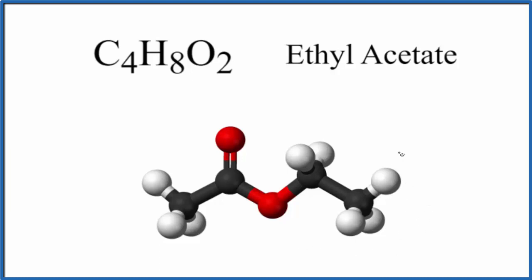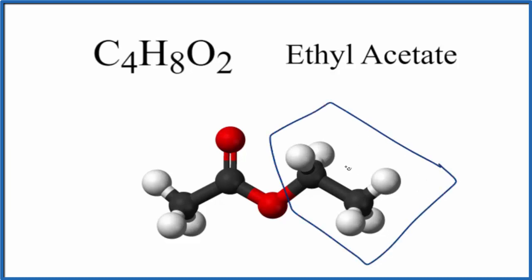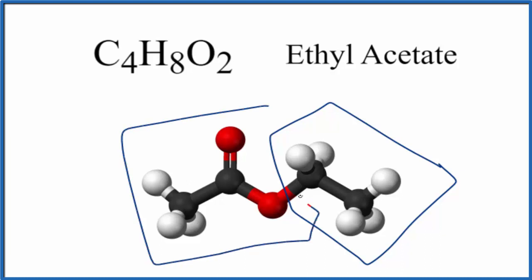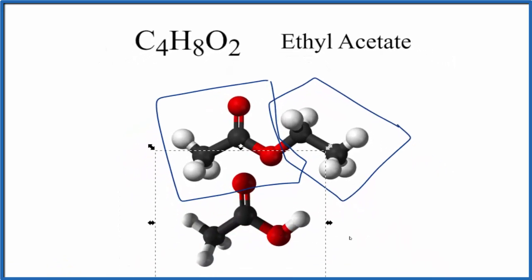From the model we can see a few things. These two carbons right here form what's called the ethyl group — a carbon and a carbon joined by single bonds. Over here is what we call the acetate ion, which comes from acetic acid. The only difference from acetic acid is we've replaced this hydrogen with an ethyl group, so when we take the hydrogen off, that gives us the acetate ion, and we add the ethyl group to get ethyl acetate.